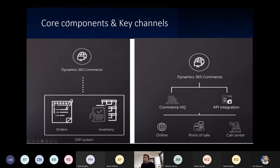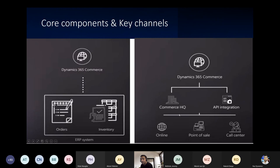The core components and key channels: D365 Commerce requires an ERP to handle orders and inventory — it can use D365 F&O or other ERP systems. Dynamics 365 Commerce has two major applications: Commerce HQ and an application interface integration layer. The three channels are online, point-of-sale, and call center. The key channel element is the Headless Commerce Engine — the nucleus of commerce and the API integration layer connecting the backend to the frontend.